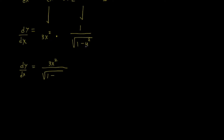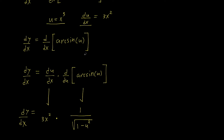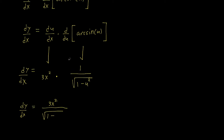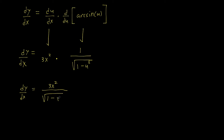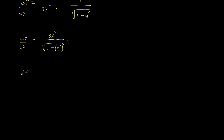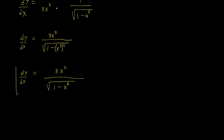The final step is back-substituting u equals x to the third. Replacing u, we have x to the third squared in the denominator. So dy/dx equals 3x squared over the square root of one minus x to the third squared. When we have an exponent to an exponent, we multiply: 3 times 2 is 6, giving us dy/dx equals 3x squared over the square root of one minus x to the sixth. And we are done.